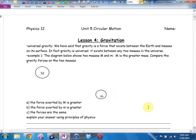Universal gravity. We have said that gravity is a force that exists between the Earth and masses on its surface. But actually, gravity is universal. Any two masses in the universe exert an attractive force on each other. It's just a really small force. You need a huge mass before you notice it.